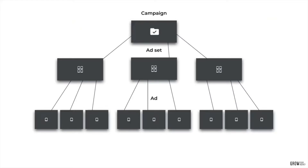Here's an example: you might have a cold campaign, and within that you might have anywhere from three to even fifty ad sets. Within those ad sets, we usually have around three to five different ads. What Facebook will do is in the first three, six, or twelve hours, it will give them all even distribution. Then based on which ones are performing best, it'll take that small sample size, extrapolate it, and assign higher budgets to those ads. So Facebook is actually optimizing that for you at the ad set level.